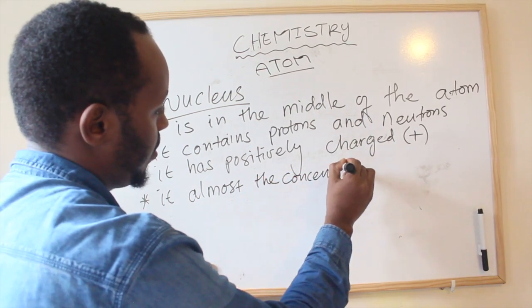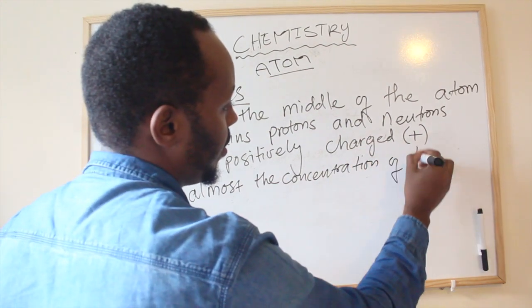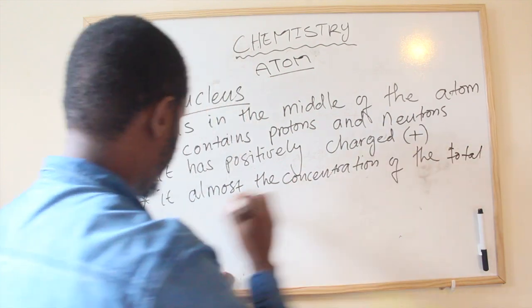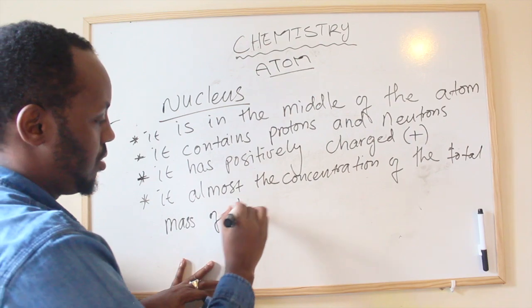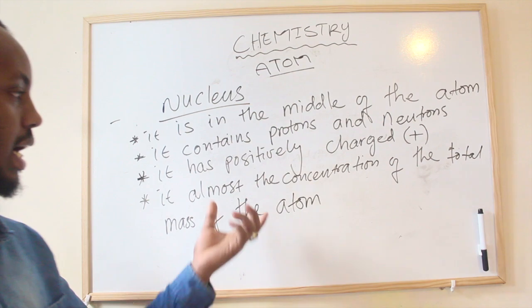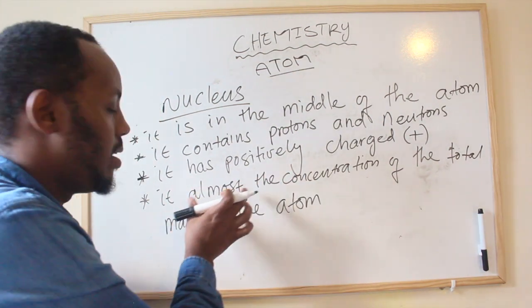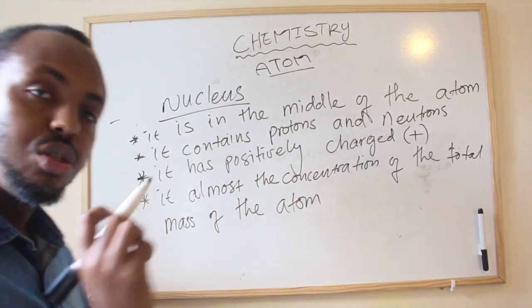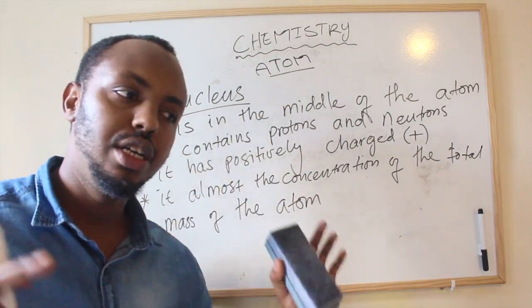The nucleus holds the concentration of the total mass of the atom. That is why we have a number of protons and neutrons there.